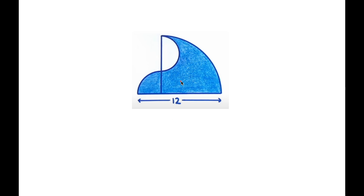I want to find the area of the shaded region — the region in blue of the shape. Looking closely, we can see a quarter circle over here and a quarter circle over here. So we have two quarter circles, and inside this large quarter circle we see a half circle, or semicircle.